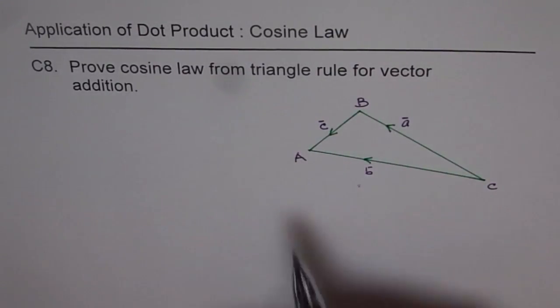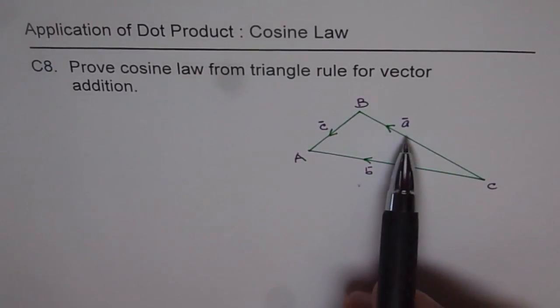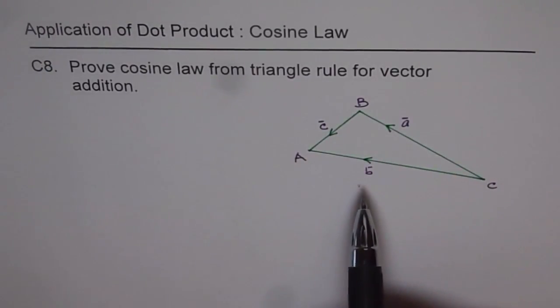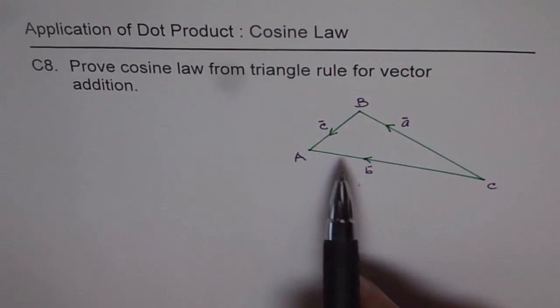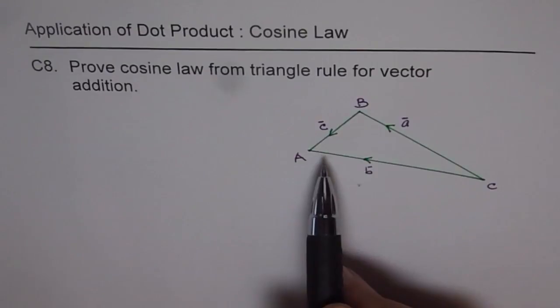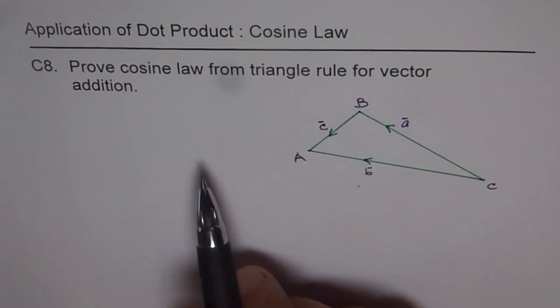Now here we are given a triangle which is triangle ABC. Side opposite to A is vector A, and likewise side opposite to B is vector B and side opposite to C is C. Now we need to prove cosine law.